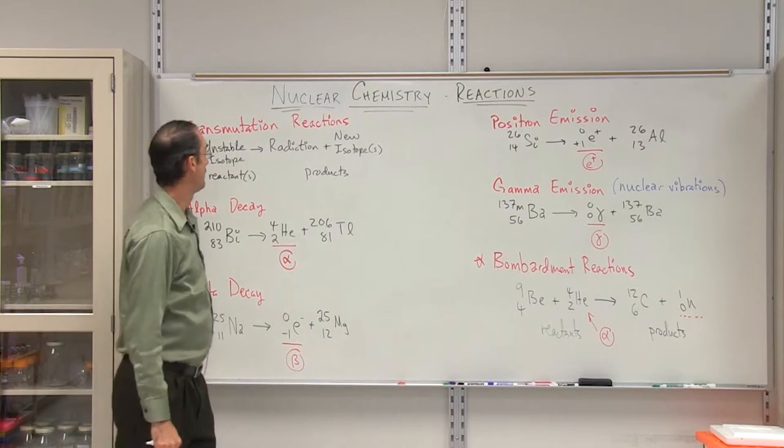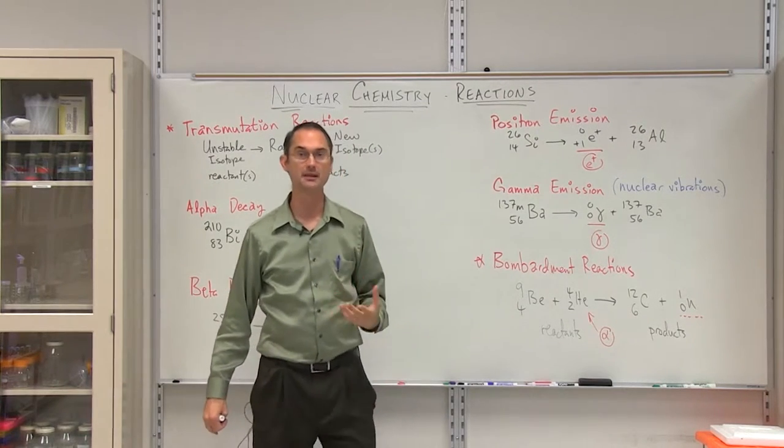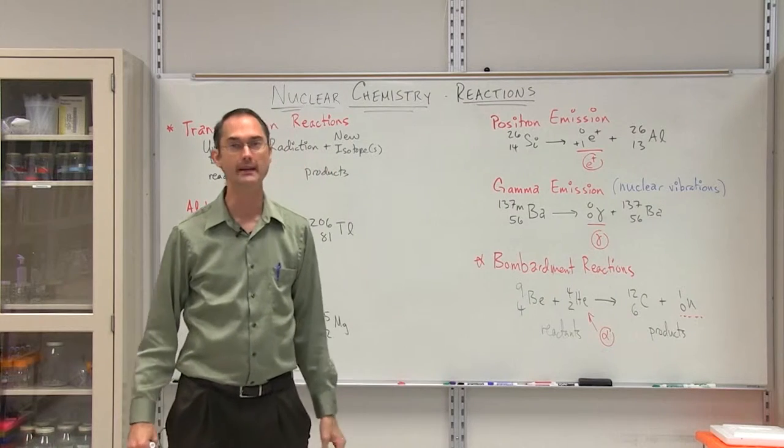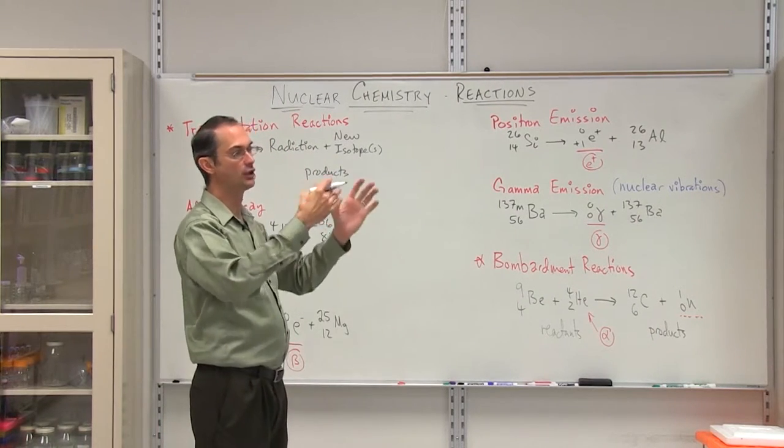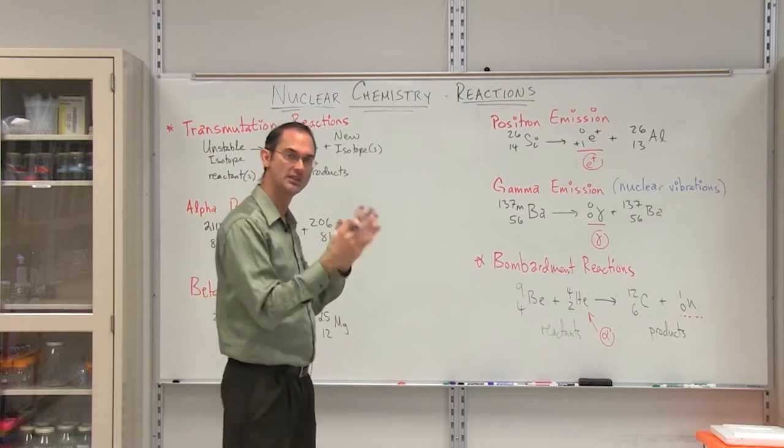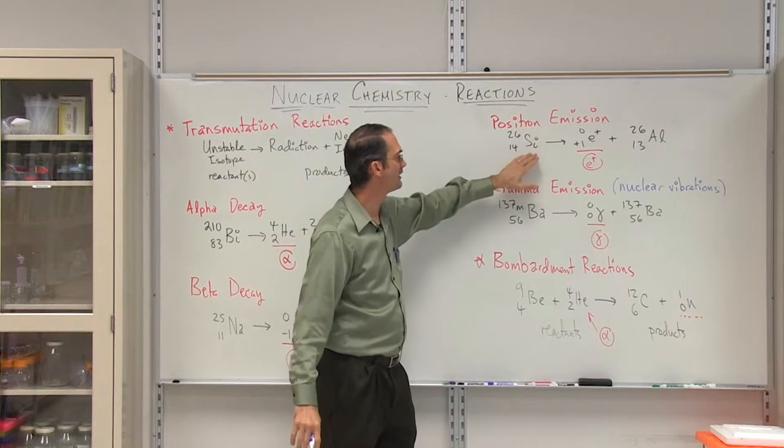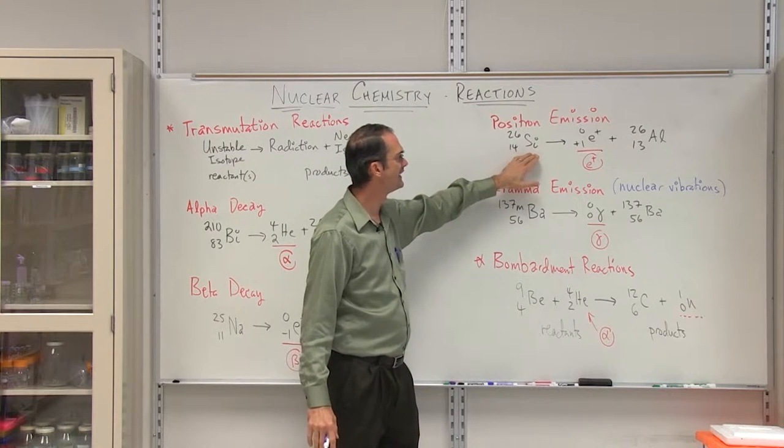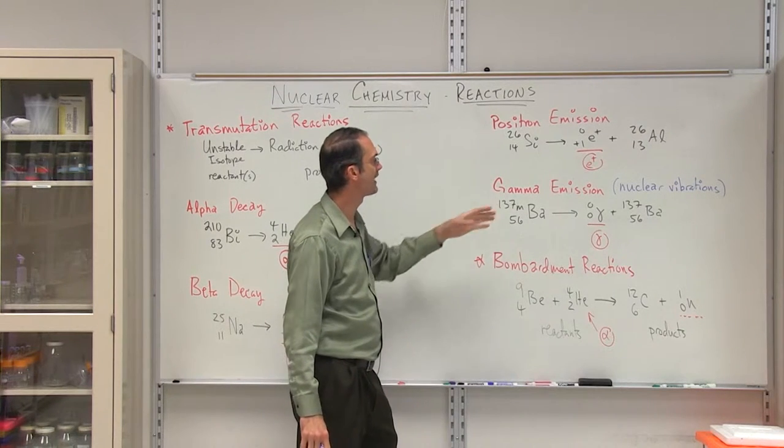The third type of transmutation reaction we'll take a look at is positron emission. And hopefully this is familiar to you from the concept of a PET scan or positron emission tomography. Tomography simply being that they're taking a look at cuts through different parts of the body to make those nice two-dimensional scans. And the way that they do that is they put some type of an element inside and they take a look at the way the positrons are in fact emitted.